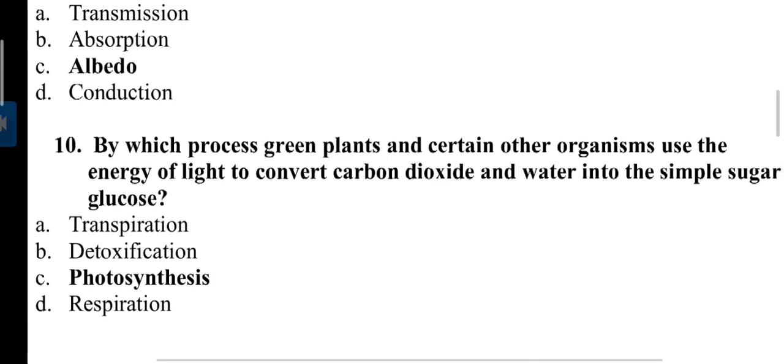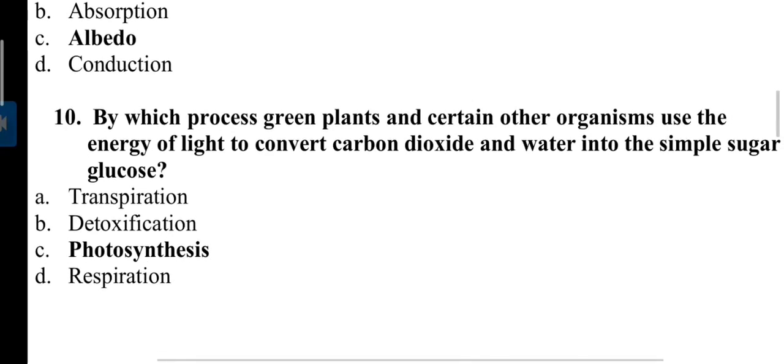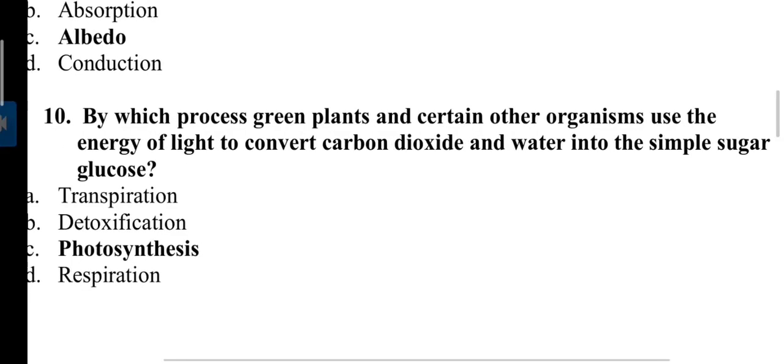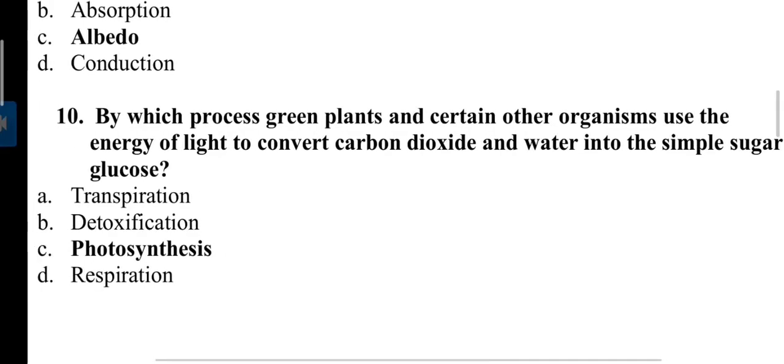Next question: By which process do green plants and certain other organisms use the energy of light to convert carbon dioxide and water into simple glucose? The process is photosynthesis. The responsible pigment for photosynthesis is chlorophyll and it is found in leaves.